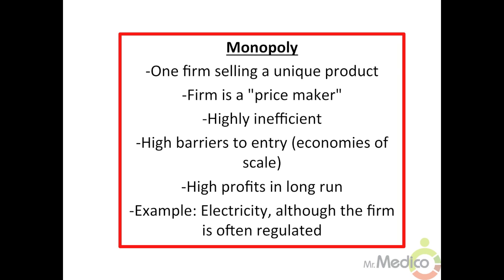A monopoly exists when there's only one firm selling a unique product, so the firm is the price maker, not a price taker. Compared to a perfectly competitive market structure, a monopoly is highly inefficient because prices are going to be higher and output is going to be lower. Economic profits can be high in the long run for the monopolist.